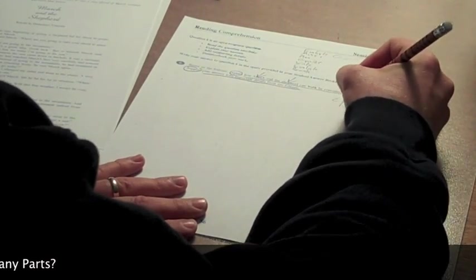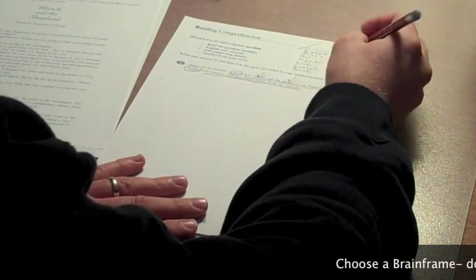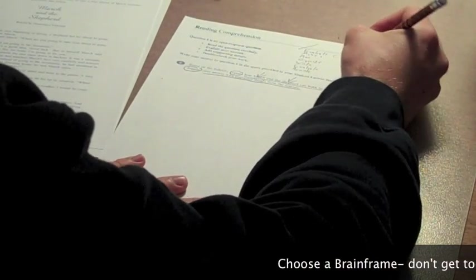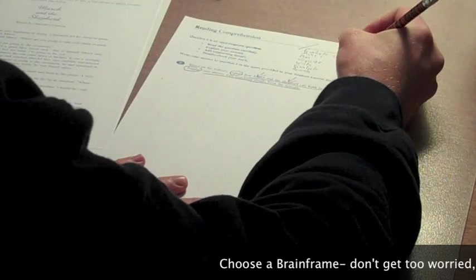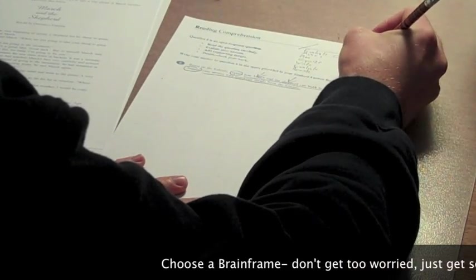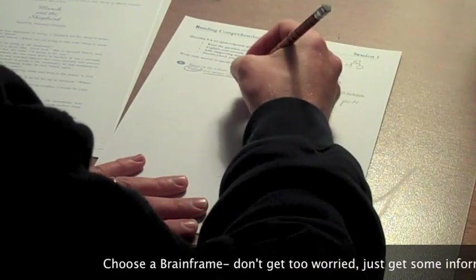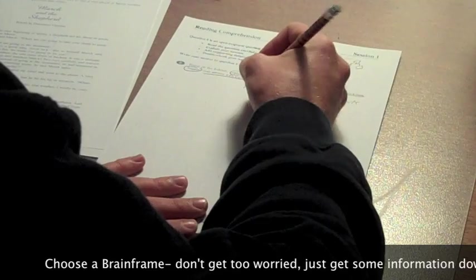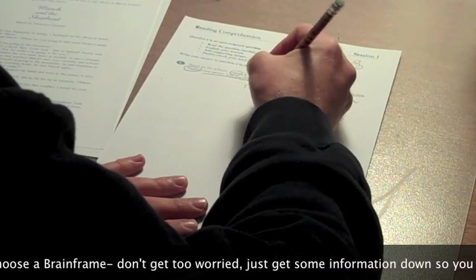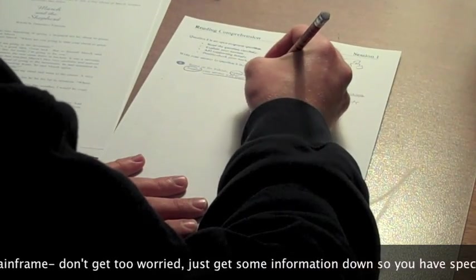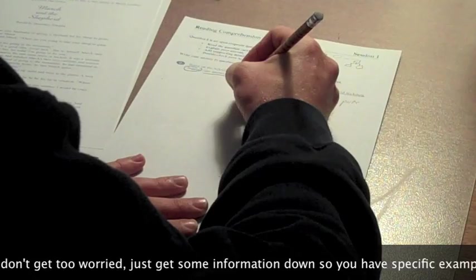I'm going to write 'two parts' and check that off. Now my plan is to make a little categorizing brain frame showing the two characters as tricksters. I want to think about what's a trickster - I don't want to lose track of the big picture.